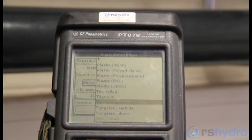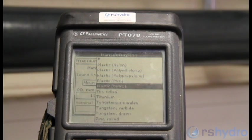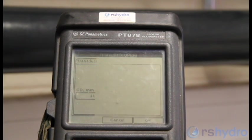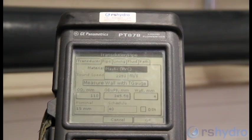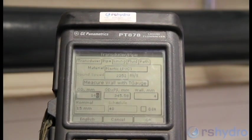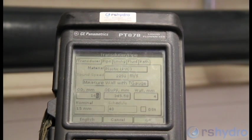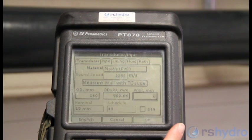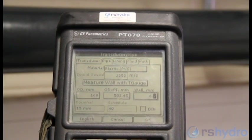Scroll over to the pipe menu, press enter, and enter the pipe material. Select PVC from the drop-down menu. Scroll to the outside diameter and enter 160 mil, then enter the wall thickness, which is 6.2 mil in this case.